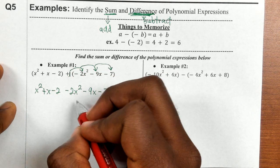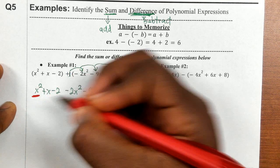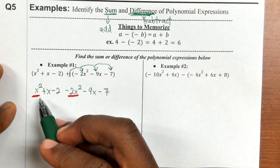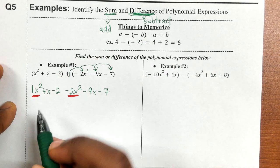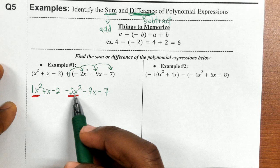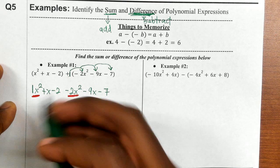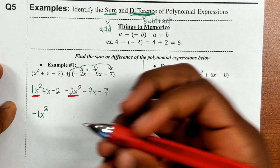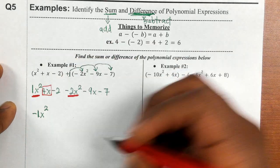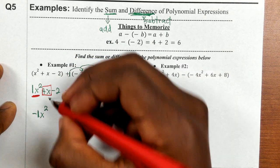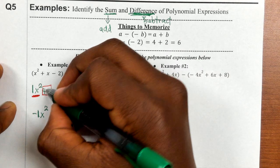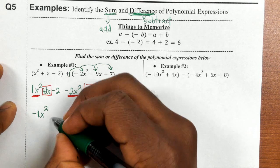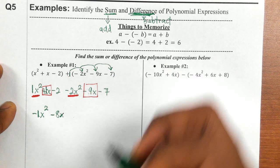Now we're going to combine like terms. The first like terms are the x squared terms: 1x squared and negative 2x squared. 1 minus 2 is negative 1, so we get negative x squared. Then we combine the x terms: 1x minus 9x. 1 minus 9 is negative 8x.